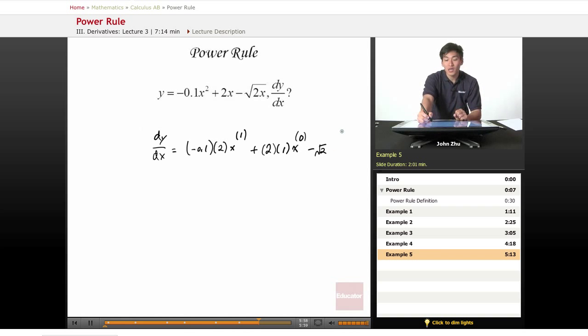x to the 1/2 is equal to the square root of x. So we multiply 1/2 times x to the n minus 1, which is 1/2 minus 1, and that's negative 1/2.